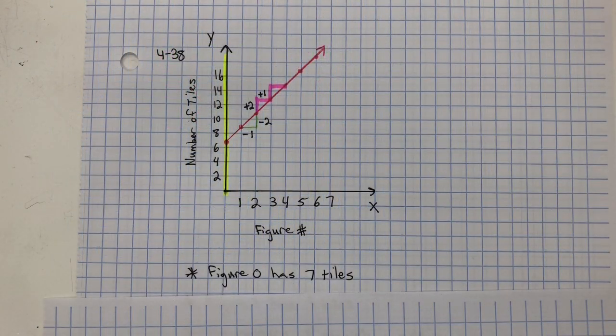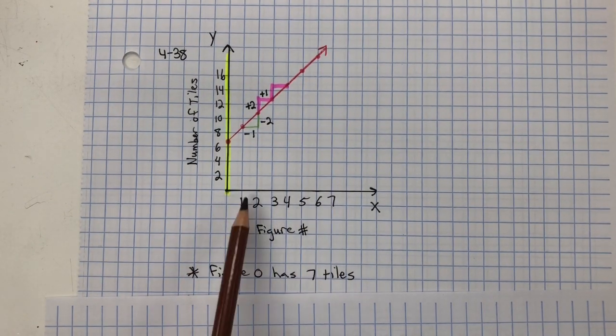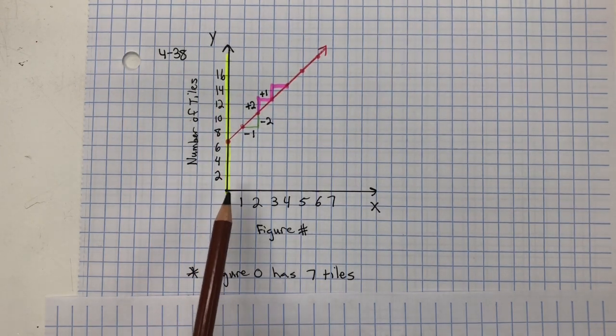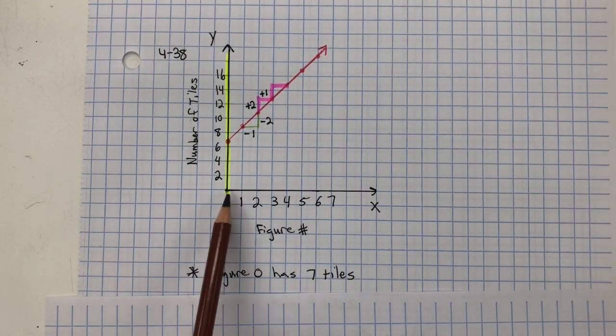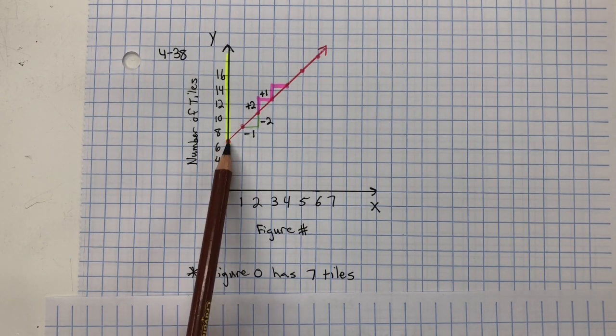In 438, you need to figure out how many tiles are in figure zero. The X-axis represents the figure numbers. The Y-axis represents the number of tiles. So for figure zero, it has seven tiles.